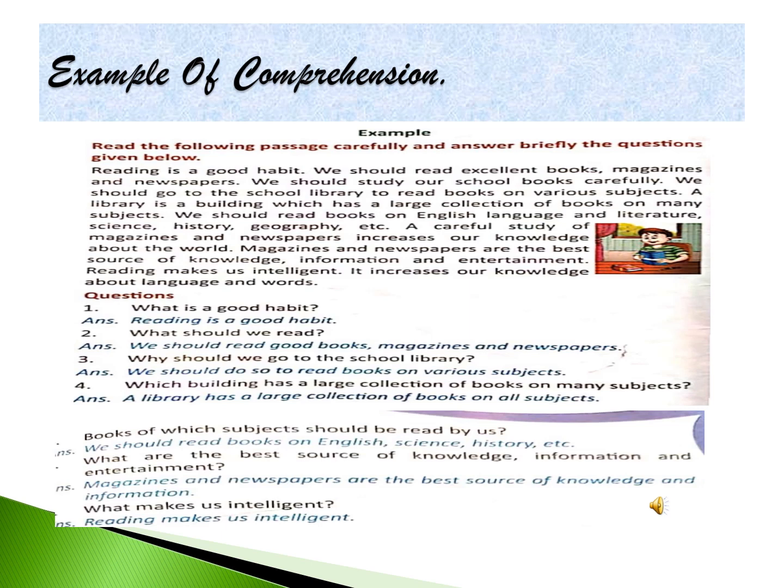Next question: Books of which subjects should be read by us? We should read books on English, science, history, etc. Next: What are the best source of knowledge, information and entertainment? Magazines and newspapers are the best source of knowledge and information. What makes us intelligent? Reading makes us intelligent — the second last line of the passage. Like this only, you will get all your answers in the comprehension, which will be given to you in your exams.